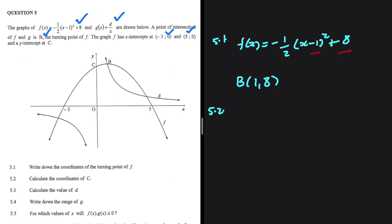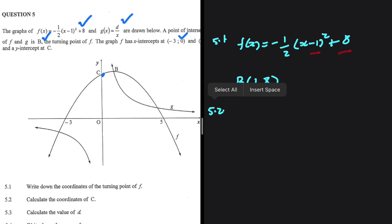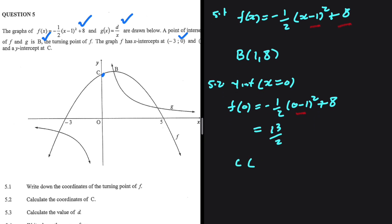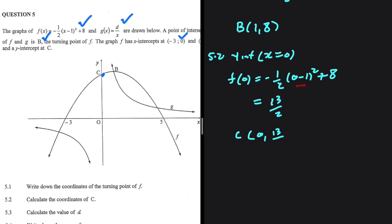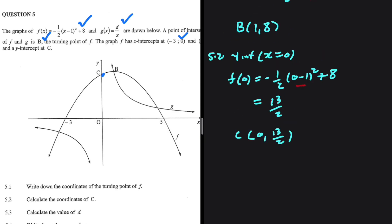In 5.2, we're looking for the coordinates of C, which is the y-intercept of F. So at the y-intercept, x equals 0. Substituting into F(x): minus 1 over 2, multiplied by (0 minus 1) squared plus 8. That gives minus 1 over 2 plus 8, which is 7.5. Actually, 13 over 2 is 6.5, not 7.5 — so we should have 15 over 2 instead. The coordinates of C are (0, 15/2).